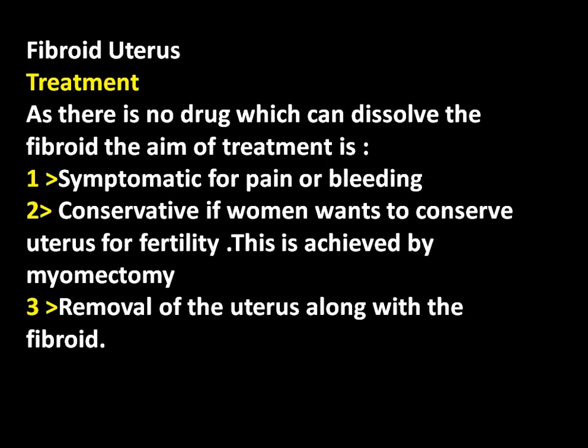As there is no drug which can dissolve the fibroid, the aim of treatment is: symptomatic, for pain or bleeding; conservative, if the woman wants to conserve the uterus for fertility — this is achieved by myomectomy; and removal of the uterus along with the fibroid if the woman has finished her childbearing, if the fibroids are multiple occupying the whole uterus, or if the age of the woman is above 40.